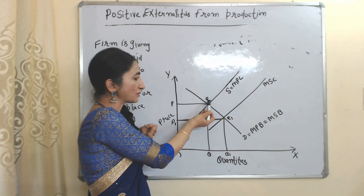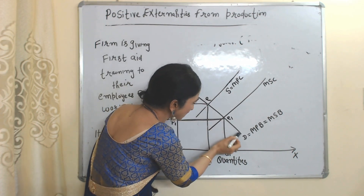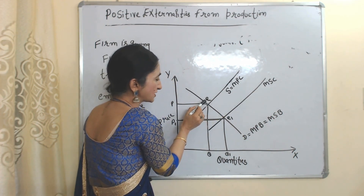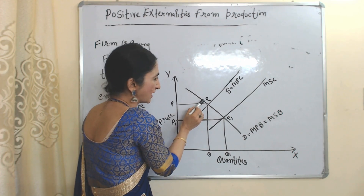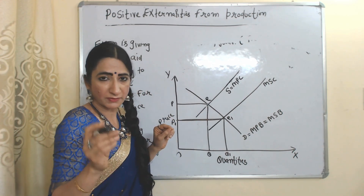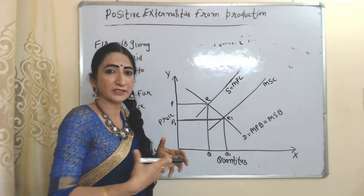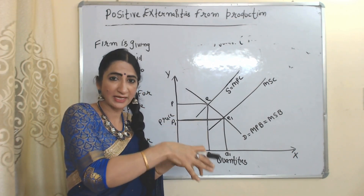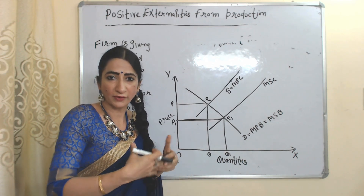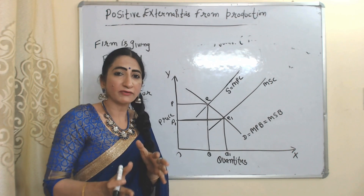But this is not the socially optimum equilibrium point. At this equilibrium point, you can see marginal social benefit is more than marginal social cost. This line represents marginal social benefit and this one is marginal social cost. At point E, marginal social benefit is more than marginal social cost, so E is not the socially optimum equilibrium point. That means the firm's production is giving more benefit to society compared to its cost.